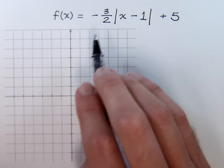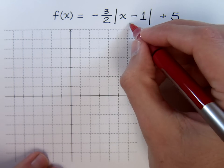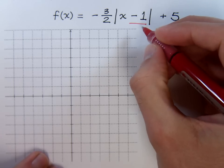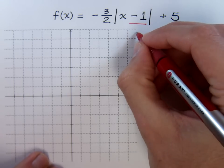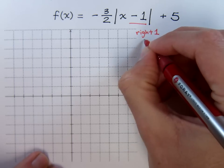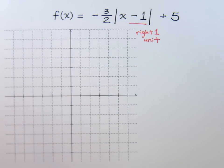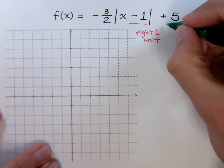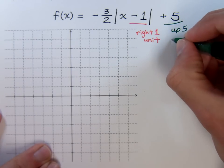Now let's just go ahead and write down all the information that we have. The first thing that we know here is that what I see on the inside I do the opposite of that. So it looks like a negative one but the opposite of that is a plus one. So that means I'm going to go to the right one unit. The five at the end I do exactly what I see here. And this means I'm going to go up five units.